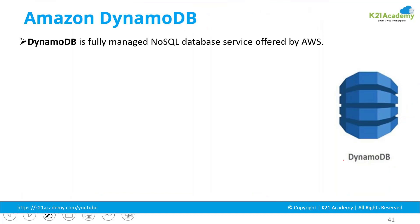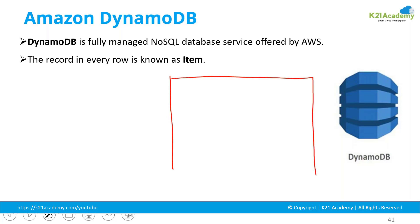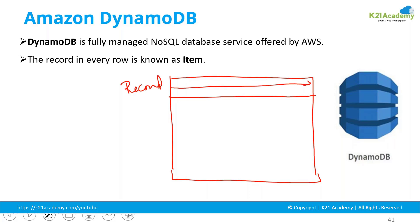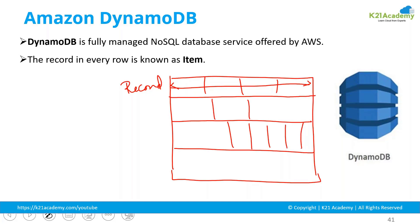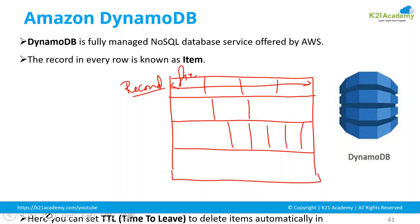DynamoDB is a fully managed NoSQL database service offered by AWS. In DynamoDB, there is no database as such — there are only individual tables. It is a non-relational structure; there will be no group of tables bound inside a database. Each record in the table is known as an item, and each item may have some attributes. Instead of rows we call them items, and instead of fields we call them attributes.